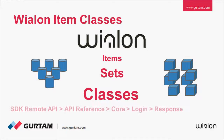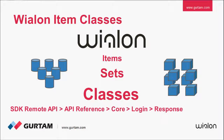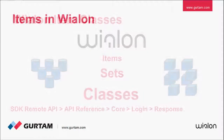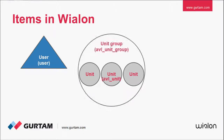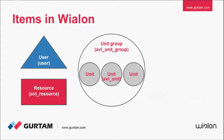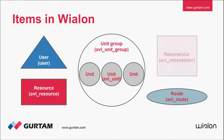You can get all item classes available for a user in the login response under key classes. Wialon items include user, unit, unit group, resource, root, and retranslator.